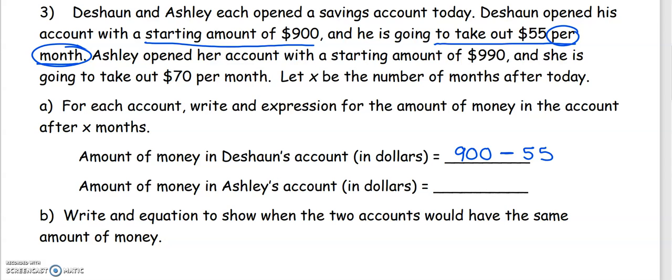It tells us that x should be the number of months, so I'm going to put x there. That's the expression that represents what Deshaun is doing with his money in his savings account. Ashley's expression is similar. She started with $990.